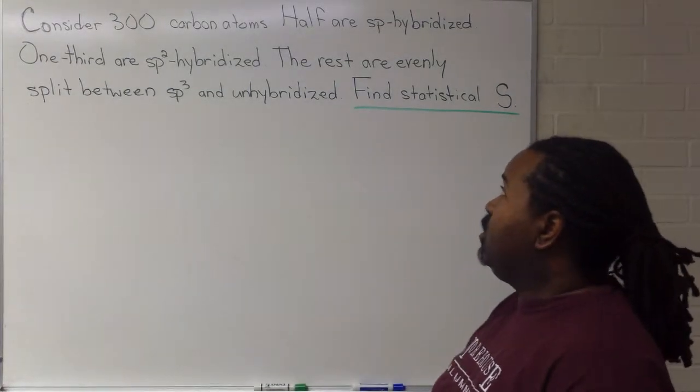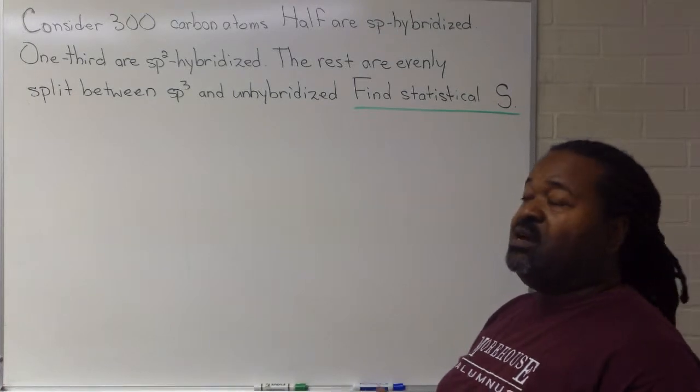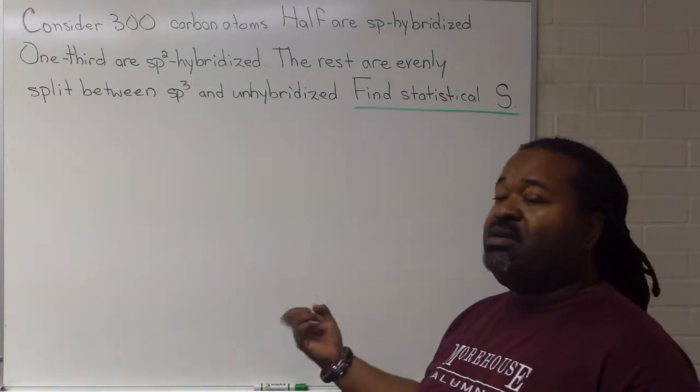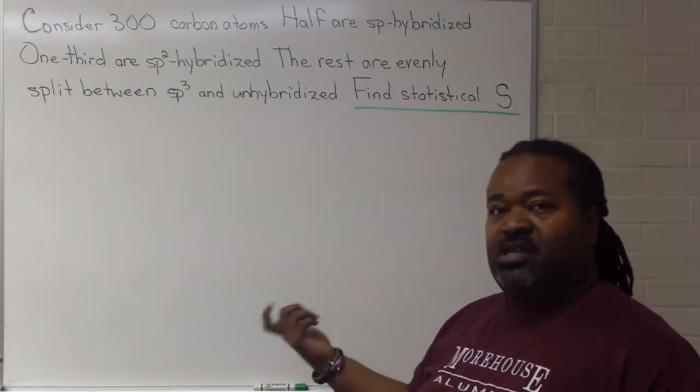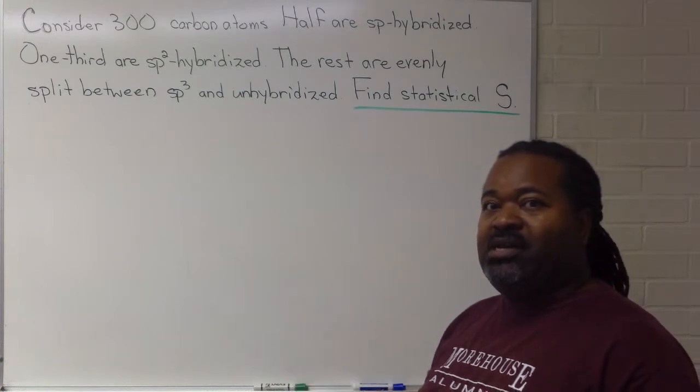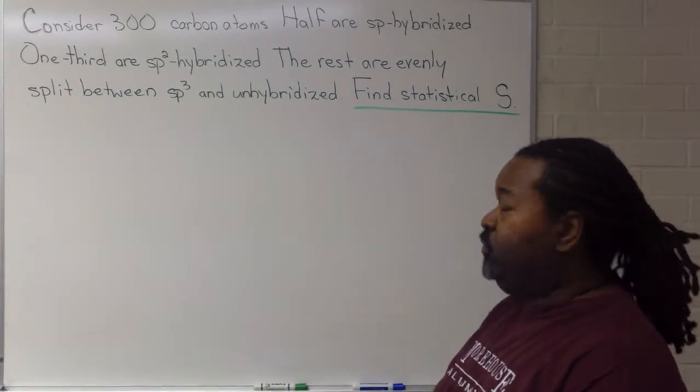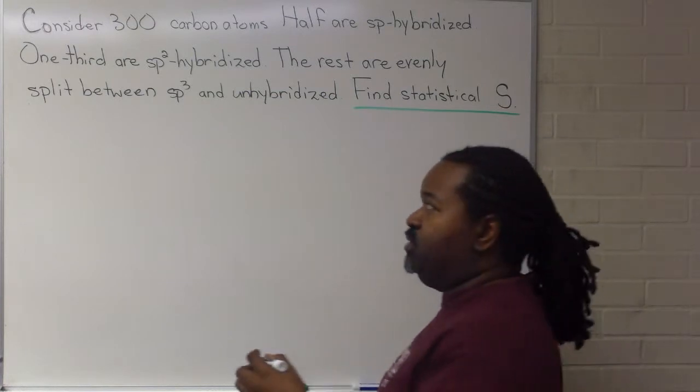It reads: Consider 300 carbon atoms. Half are SP-hybridized, one-third are SP-2-hybridized, and the remainder is an even split between SP-3 and unhybridized. We're asked to find an expression for statistical entropy.